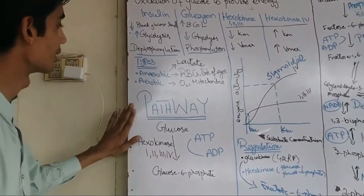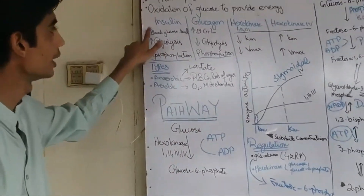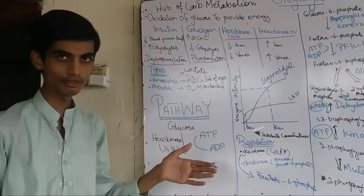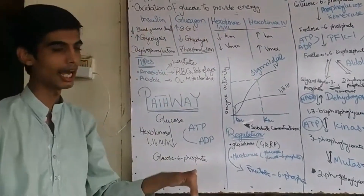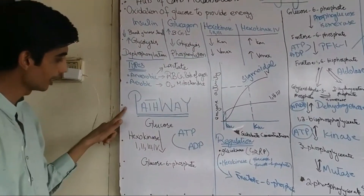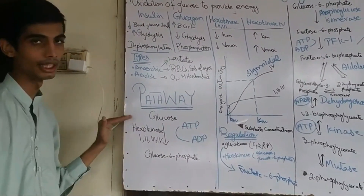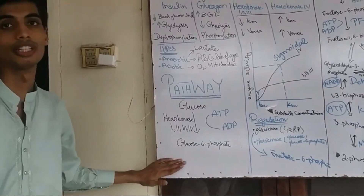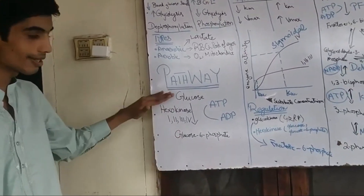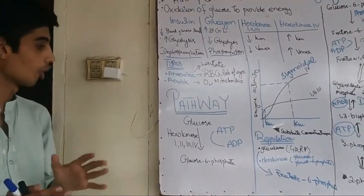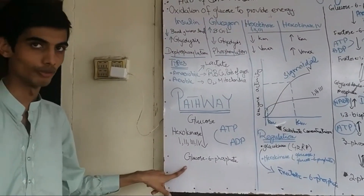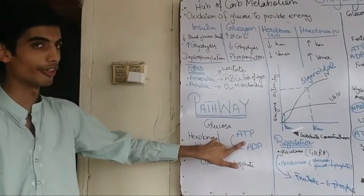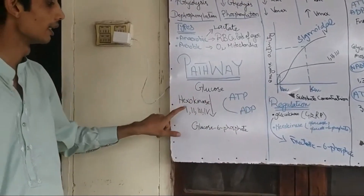Now we move towards the pathway of glycolysis, keeping in mind that insulin enhances and glucagon de-enhances glycolysis. Step one: whenever glucose enters the cell, it must be phosphorylated, because glucose can cross the membrane but glucose 6-phosphate is impermeable to the cell membrane. To entrap glucose within the cell, it is converted into glucose 6-phosphate using ATP — the phosphate group comes from ATP. The enzyme utilized is Hexokinase.